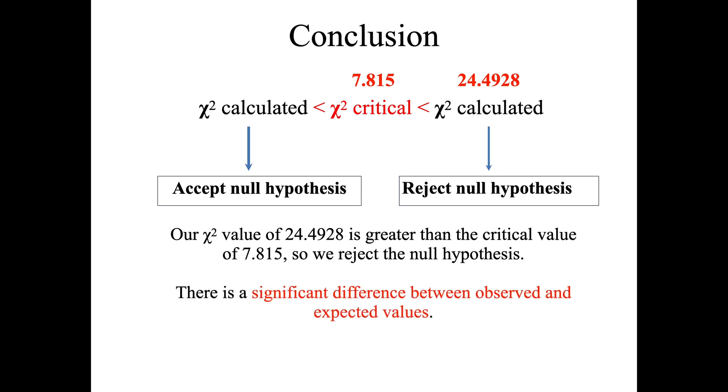In this case, there is a significant difference between the observed and the expected values. So what does this tell us? This tells us that the traits for the body color and the eye color are actually linked—they are found on the same chromosome. That's what linked means. Therefore, they do not undergo independent assortment during meiosis because they're on the same chromosome; they're inherited together.